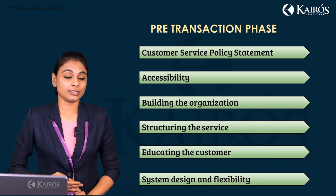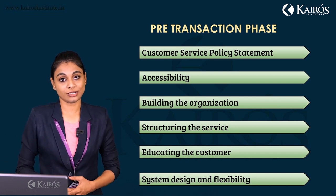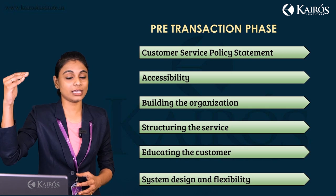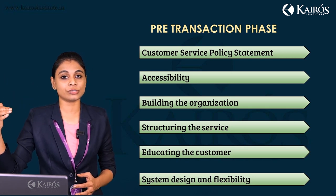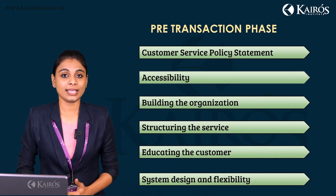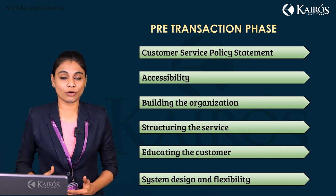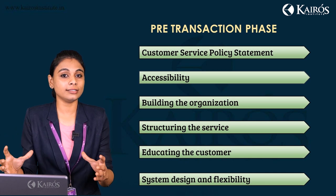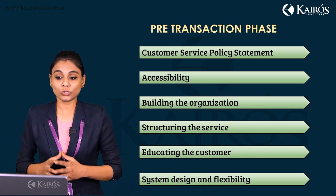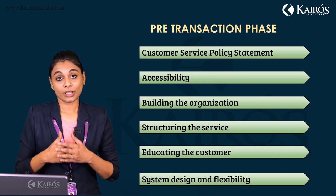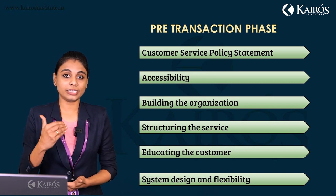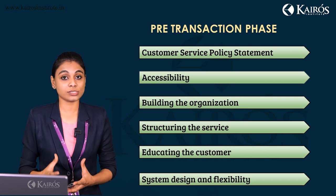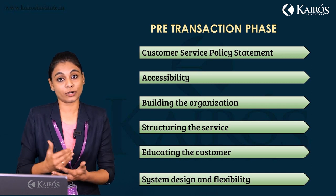The third element is building the organization. Every organization has a structure — from the CEO, CFO, and MDs, down to regional managers, supervisory level, and executive level. This delegation of authority and communication has to be properly structured. The fourth element is structuring the service: how the product is made available to the customer, and what supply chain or logistics process is involved in delivering the product.